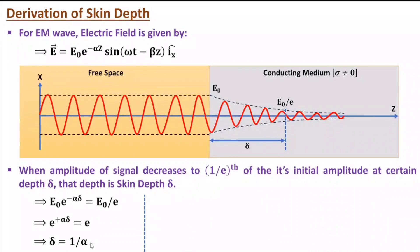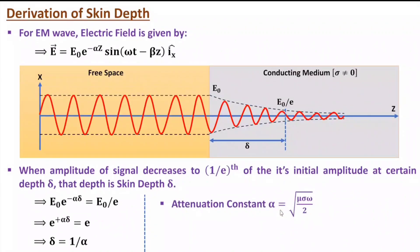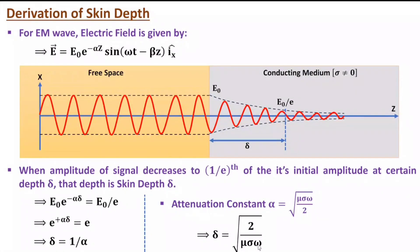In my last video, I derived the attenuation constant for a lossy (conducting) medium: alpha = √(μσω/2). If you substitute this alpha into the skin depth equation delta = 1/alpha, you get: delta = √(2 / μσω). This is the skin depth formula.